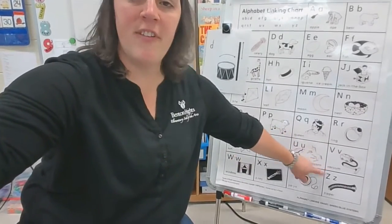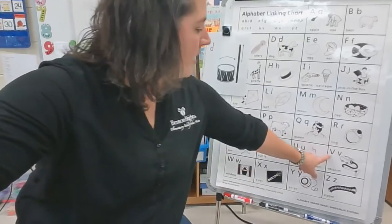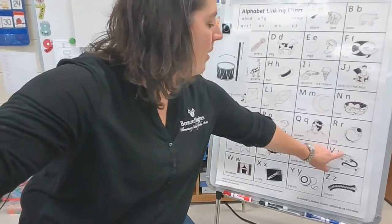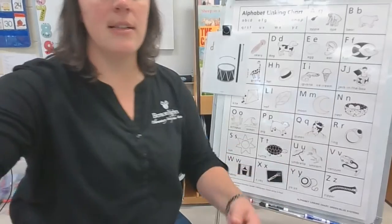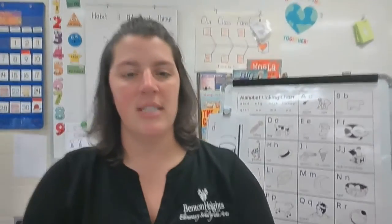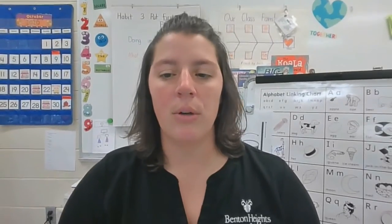Say the word vacuum. Vacuum starts with V. V is another letter where the uppercase and the lowercase look the same except different sizes. Now we're going to learn how to write the letter V.